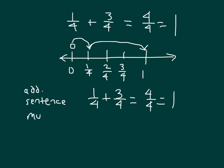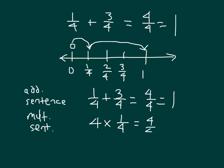With our multiplication sentence, here we were looking at 1 fourth, and then 3 more fourths. So 1 and 3 is 4 — we were looking at 4 of those fourths: 1, 2, 3, and 4. So 4 times a fourth equals 4 fourths, which also equals 1. 4 fourths does equal a whole.